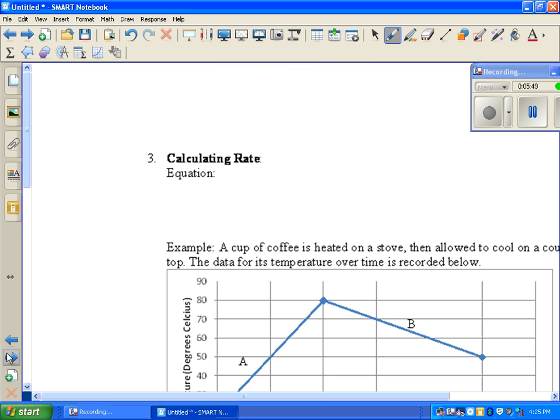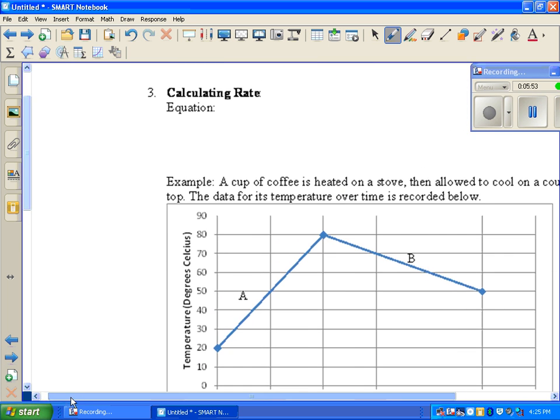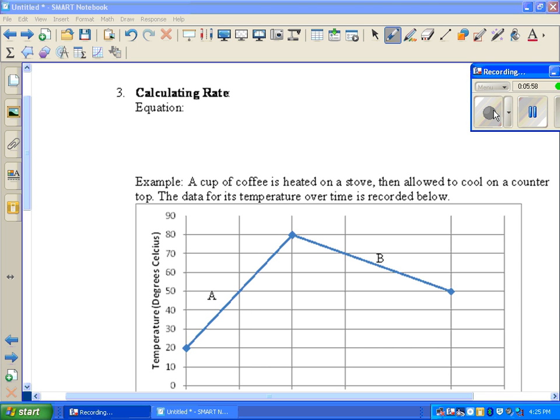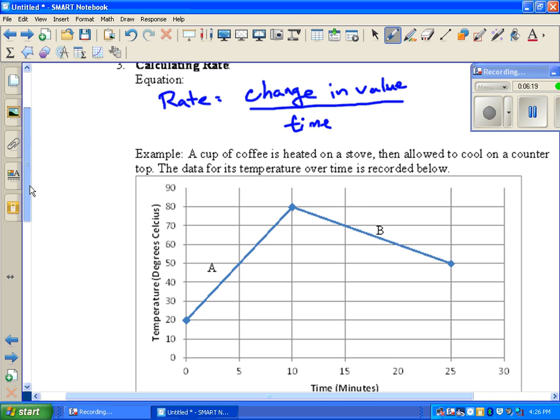And at the top of the next page, calculating rate. This is another equation that is on the front of the reference table. The equation for it is going to be our rate is change in value over the time it took. They use slightly different words. They say change in field value. I just think of change in value.